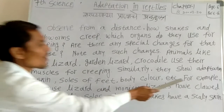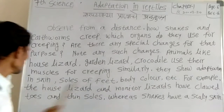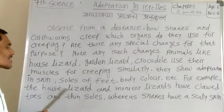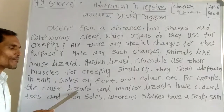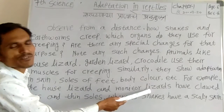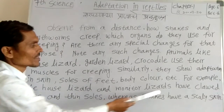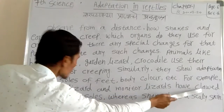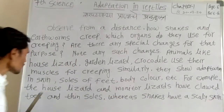Body color. For example, house lizard and monitor lizard. Their body color adapts so that they blend with their surroundings — this is camouflage adaptation.